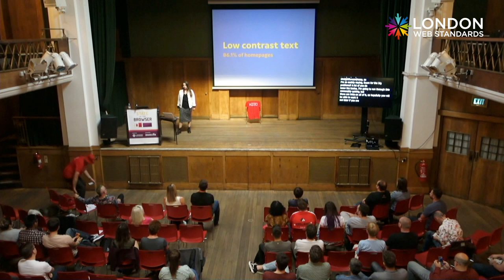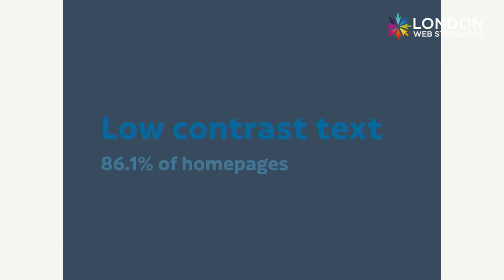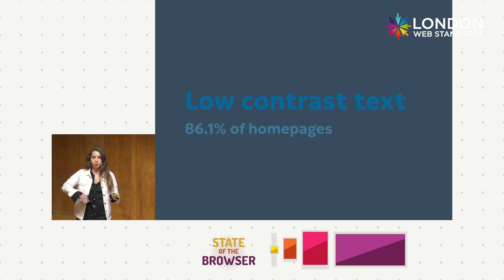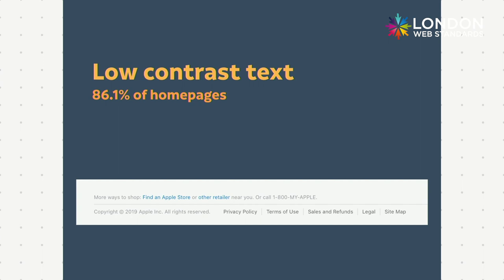So, low contrast text. This is text that has a low contrast against its background colour, which makes it hard to read — especially for people who have sight loss, difficulty reading, or are colour blind. But also for people using older devices that have darker screens, or who have turned the brightness down to conserve battery. The tiny grey text Bruce mentioned is a design habit of trying to make things minimal. This is Apple's site — every time I do a talk, I can go back to Apple's footer and find tiny grey text.